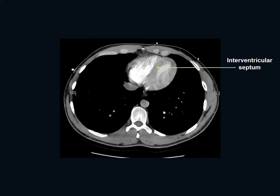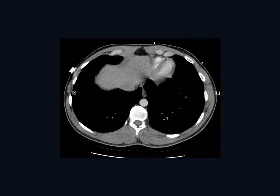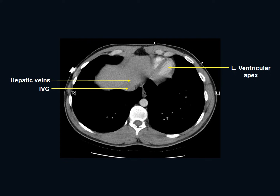Scrolling down further we see the interventricular septum, the right ventricle, and the most basal and inferior aspect of the left ventricle almost entering the abdomen. The IVC is coming from the abdomen into the right atrium, and the descending thoracic aorta will become the abdominal aorta as it passes through the diaphragmatic hiatus. In the most inferior image we enter the abdomen, seeing the hepatic dome, the apex of the left ventricle sitting on the diaphragm, the hepatic veins, the suprahepatic IVC, and the distal esophagus.